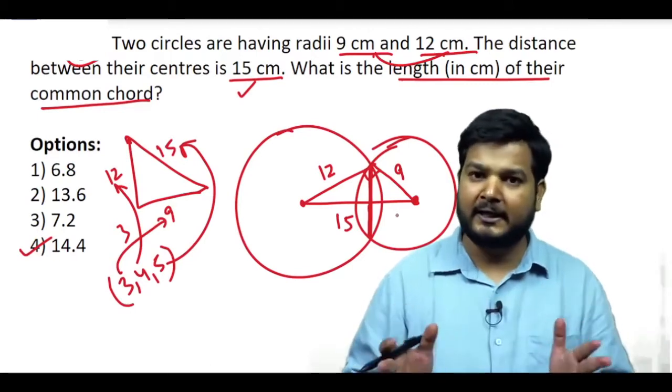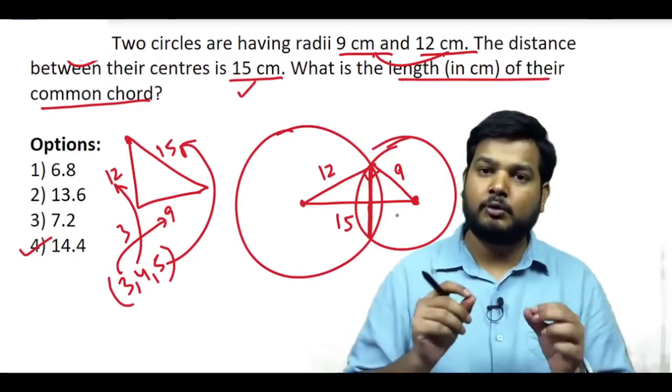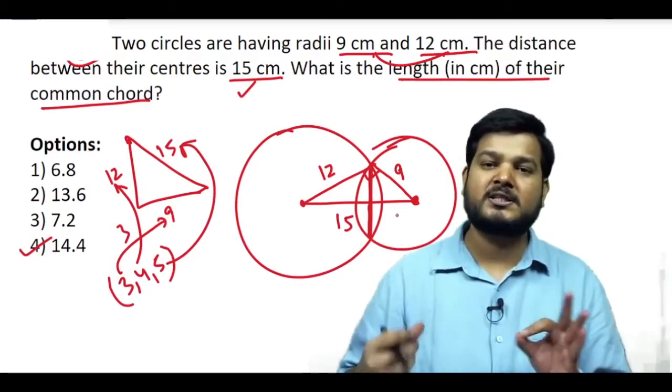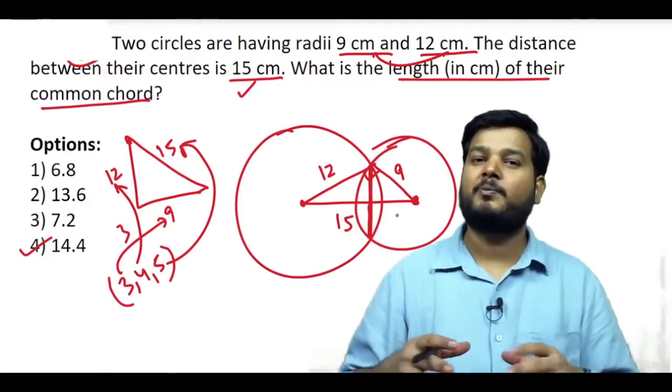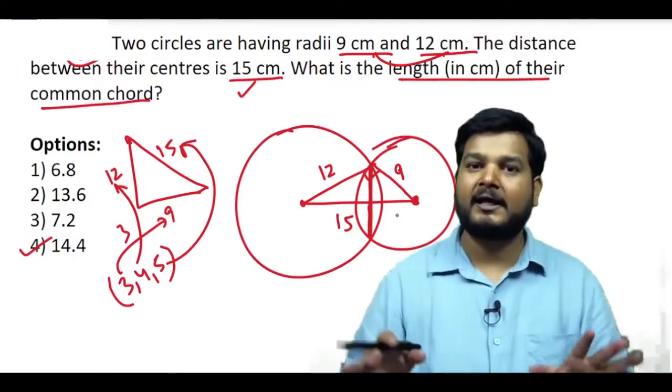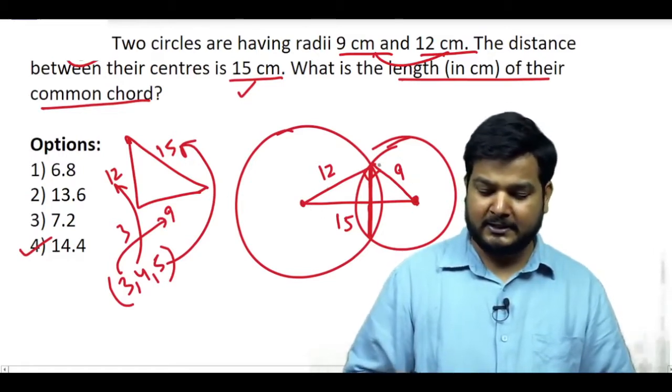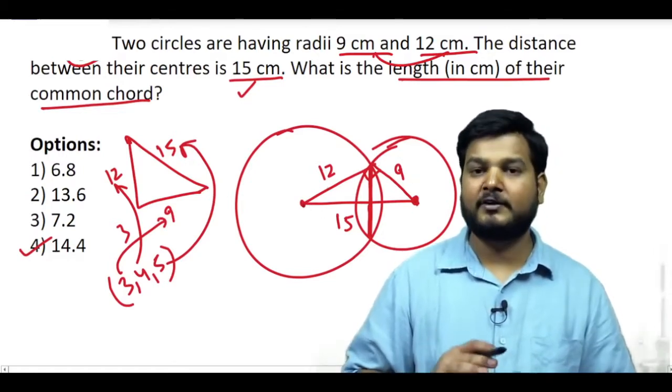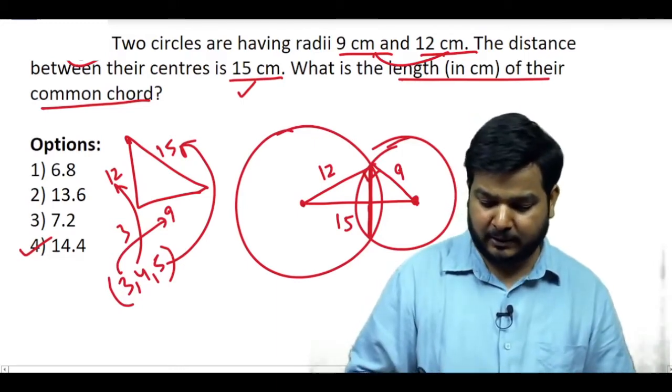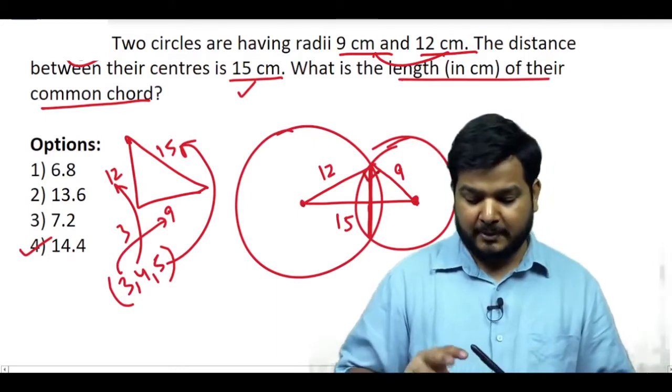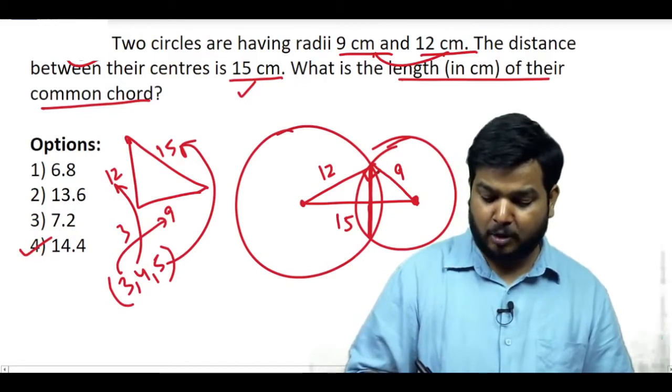Toh yeh dekhe yeh information bohot zaroori. Yeh kai baar questions mein aapko specifically right angle triangle ke baare mein nahi batayenge lekin jo us triangle ki dimensions hain wo triplets honge toh woh Pythagorean triplet batata hai ki bhai yeh angle 90 degree hai. Jaise yaha par tha center ke beech ki duri yeh nahi batati 15 hai, yeh aapka 9 hai, yeh aapka 12 hai, toh ban gaya Pythagorean triplet aur yeh angle kya ho gaya bhai 90 degree.